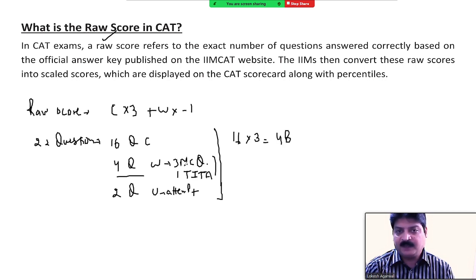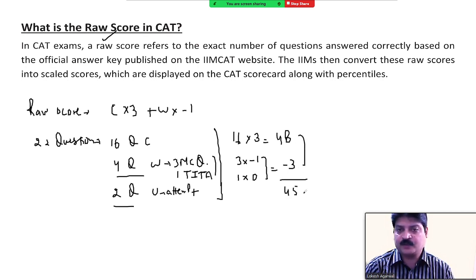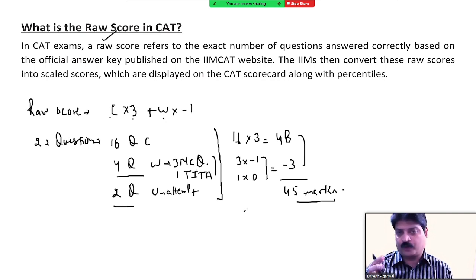लेकिन हमने 3 MCQ गलत किए हैं, उसके लिए 1-1 mark deduct होगा, यानी minus 3। जो एक TITA-based question हमने गलत किया है, उसके लिए कोई mark deduct नहीं होगा। Unattempted का न mark मिलेगा न deduct होगा। तो हमारा raw score बना 45 marks — that is called raw score. Raw score is your correct answers multiplied by 3, minus 1 for each wrong MCQ.